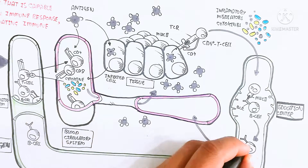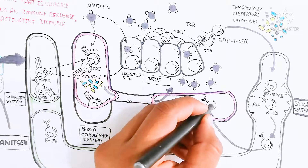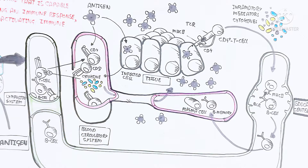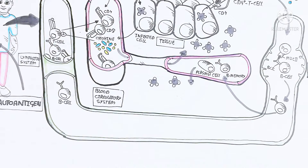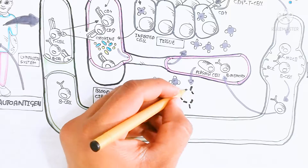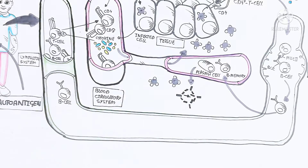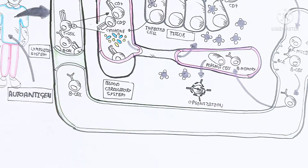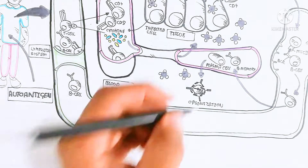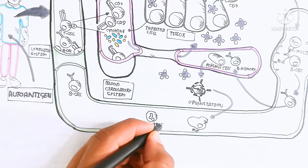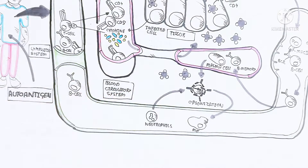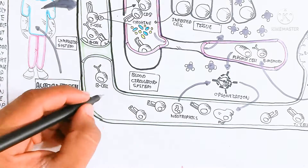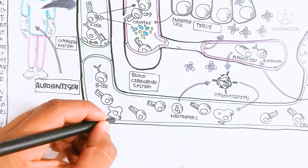The B cell converts into B memory cells and plasma cells. The pathogen is then neutralized by antibody production from the plasma cell — a quick response. The long-term B memory cells produce antibodies within the circulatory system for further and instant infection clearance. Opsonization occurs around the antigen, making it easier for neutrophils to engulf it. Neutrophils hydrolyze the pathogen using hydrolytic enzymes and lysozyme, and macrophages engulf and neutralize the pathogen, clearing the infection.